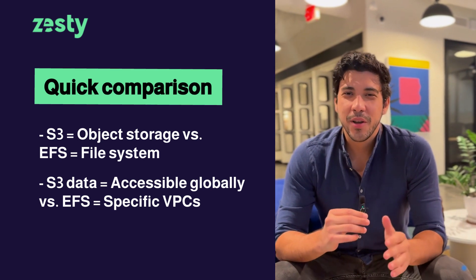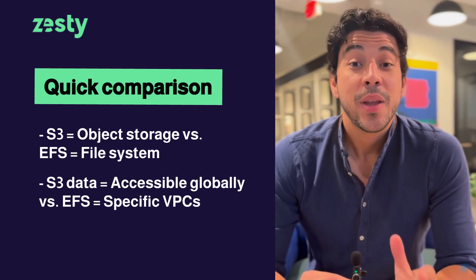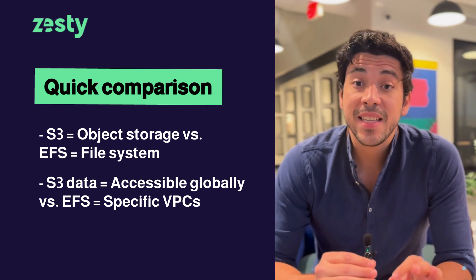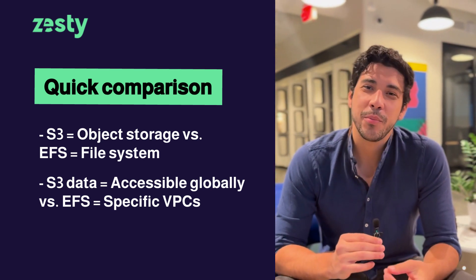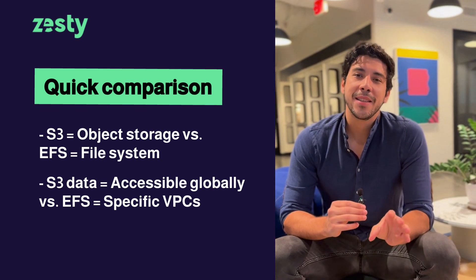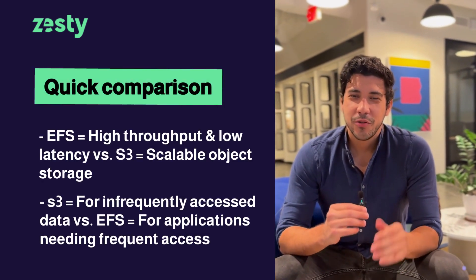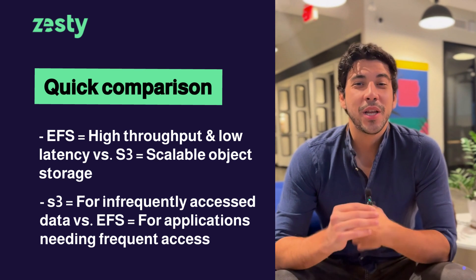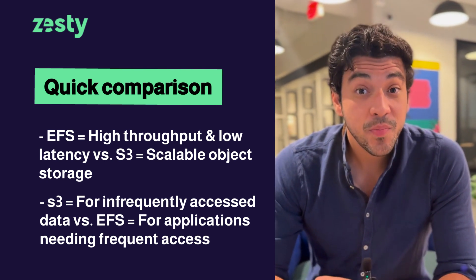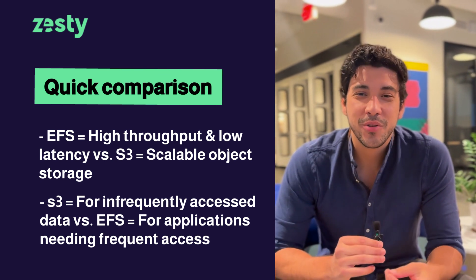Let's quickly compare the two. Storage type: S3 is object storage while EFS is a file system. Accessibility: S3 data is accessible globally whereas EFS is tied to specific VPCs. Performance: EFS offers high throughput and low latency for applications needing a shared file system, while S3 is optimized for scalable object storage.